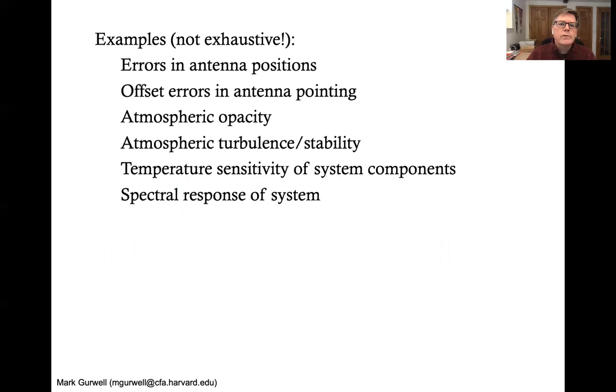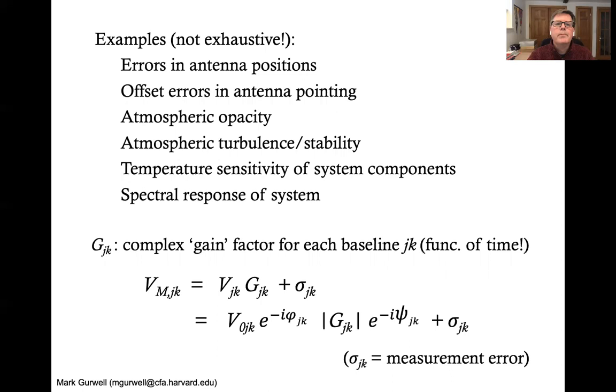So here's a few examples that are not exhaustive. There are errors in the antenna positions. So the baseline distance might not be known or the orientation might not be known. There are offset errors in the antenna pointing. There's atmospheric opacity problems. There's atmospheric turbulence and stability issues. There's temperature sensitivity of system components. Both the mechanical structure of the antennas or even the electronics might have some sensitivity. Anything with a signal transfer can have a temperature sensitivity. The spectral response of the system needs to be calibrated.